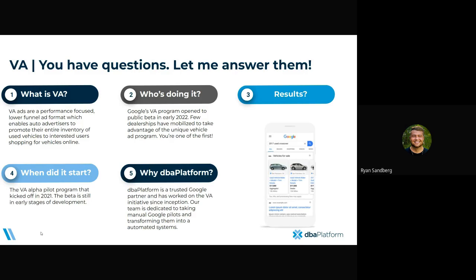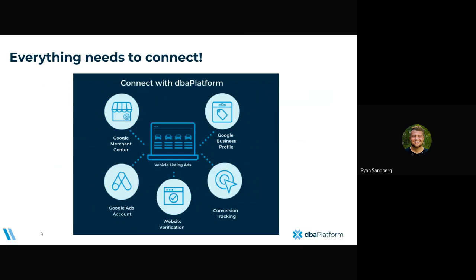When did it start? It kicked off in 2021 and it's still in early stages of development. Why DBA platform? DBA platform is a trusted Google partner. We've worked side by side with them since this began, so we've been able to really work through this process and make it a little more automated and streamlined. The key parts in how we're going to get your vehicles live on Google are: Google Merchant Center, Google Ads account, website verification, conversion tracking, and the Google Business Profile.